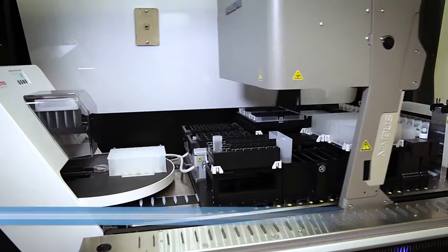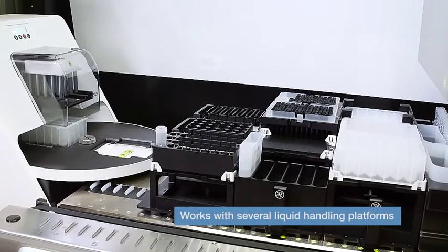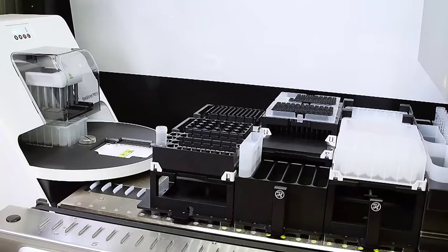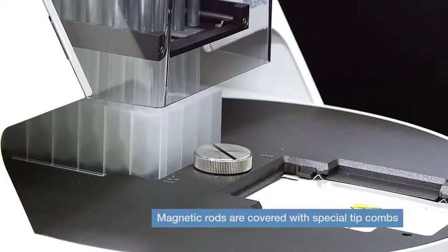Using the Hamilton Nimbus HD as an example, watch as the compact Kingfisher Presto and built-in turntable with two-plate position fit easily into an automated system.